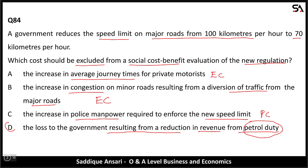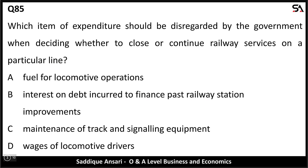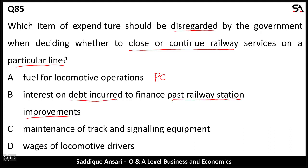Next question: which item of expenditure should be disregarded by the government when deciding whether to close or continue railway services on a particular line? Option A: fuel for locomotive operations — this is a private cost for the government and will be considered, so A cannot be the answer. Option B: interest on debt incurred to finance past railway station improvements.